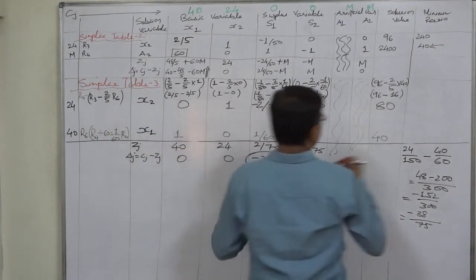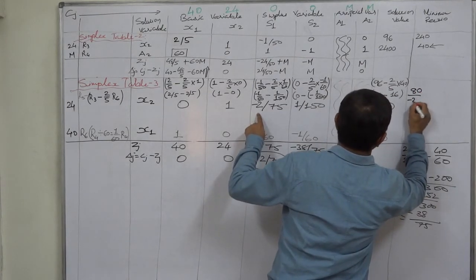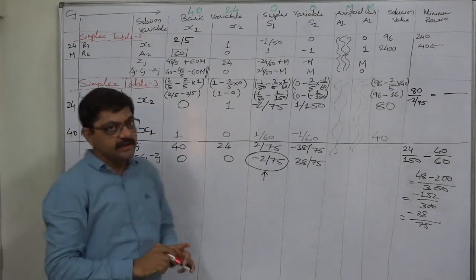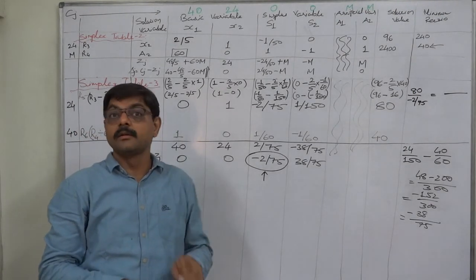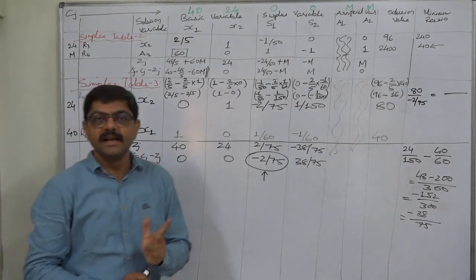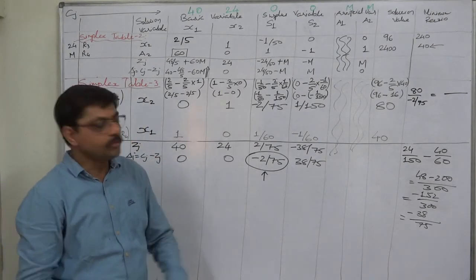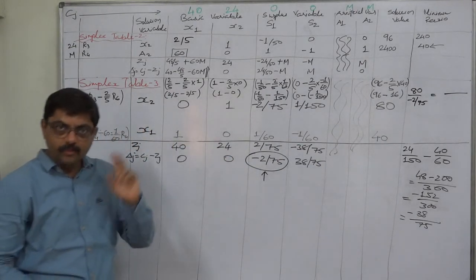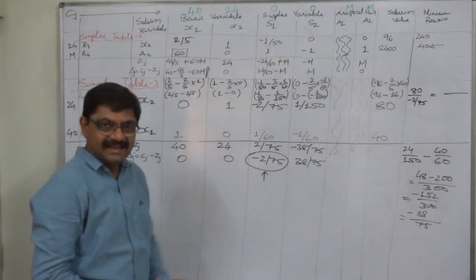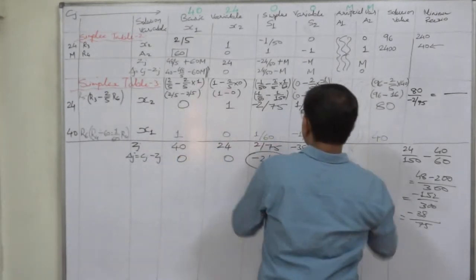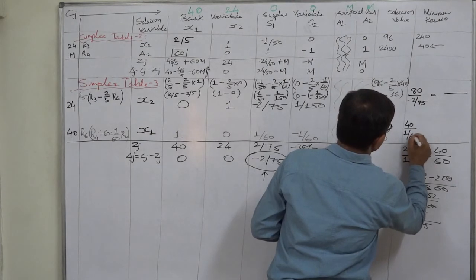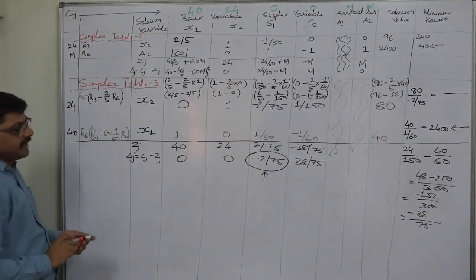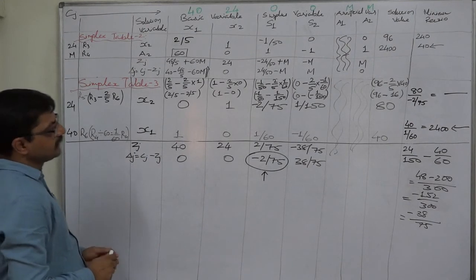Finding the replacement ratio: 80 divided by −2/75 gives a negative result, so we do not write it — we only select the minimum positive ratio. Remember: always write only positive ratios to select the correct minimum. For R6: 40 divided by 1/60 = 2400, which is positive, so R6 becomes the key row and S1 the key column, with 1/60 as the key element.